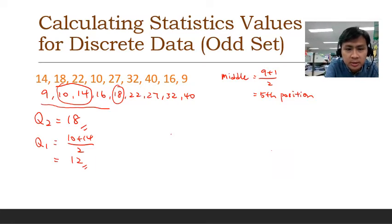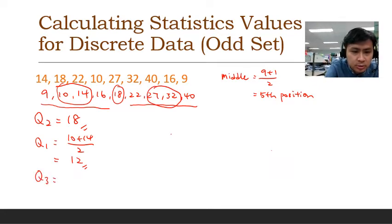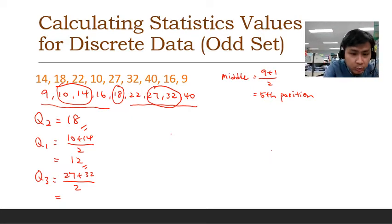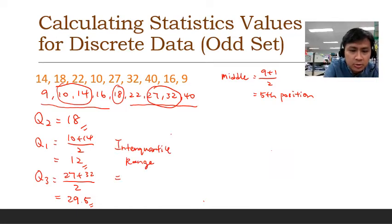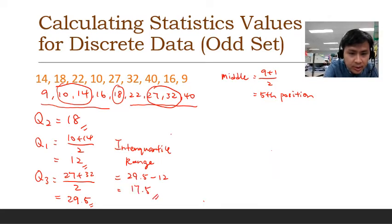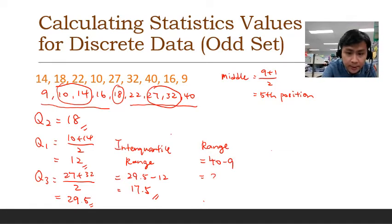The upper quartile is the middle of the upper half data. Since there are four numbers in the upper half, we take the average of 27 and 32: (27 + 32) / 2 = 29.5. So Q3 = 29.5. The interquartile range is Q3 minus Q1: 29.5 minus 12 = 17.5. The range is maximum minus minimum: 40 minus 9 = 31. That is how we calculate the statistical values for this discrete data set.